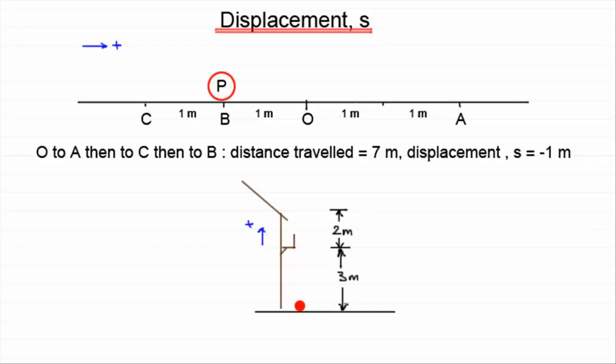So it is important then to understand what we mean by the displacement S and how it differs from distance. It's only going to be the same thing if our particle never changes direction.